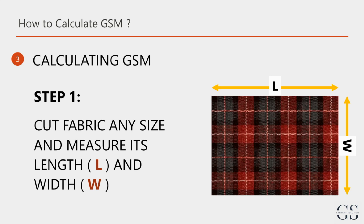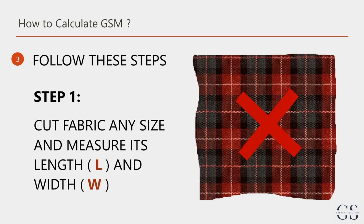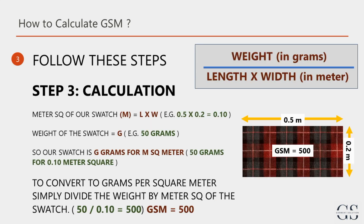Alternatively, in case due to any fabric limitations you can't cut a full meter, we'll discuss a calculation method using any size fabric. Take a fabric cut, note its length and width in meters, and weigh it in grams. Make sure the fabric is cut straight. The product of length and width gives you the square meter, and dividing the weight by this value provides the GSM. It's a straightforward calculation that ensures accurate results.